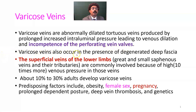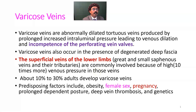Varicose veins also occur in the presence of degenerative deep fascia. The deep fascia is essential for retaining the muscle pressure and helping the perforating vein to flow blood from superficial veins to the deep veins. The superficial veins of the lower limb — the great and small saphenous veins and their tributaries — are commonly involved because of high venous pressure, maybe 10 times more than average vein pressure, specifically when the person is standing for prolonged time.